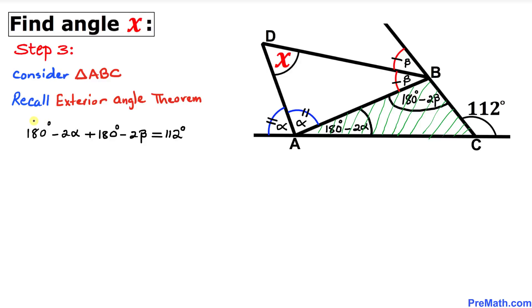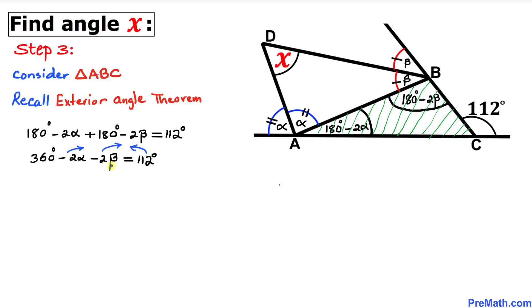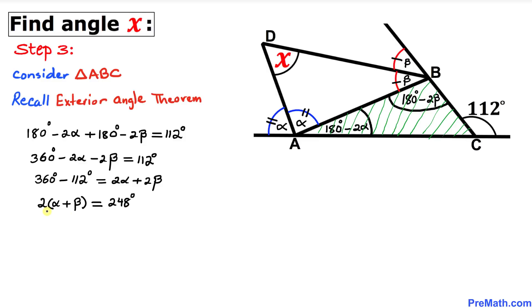Let's go ahead and combine the like terms. We can write 2 times 180, which is 360 degrees, minus 2 alpha minus 2 beta, equals 112 degrees. Now let's move 112 degrees to the left hand side and 2 alpha and 2 beta to the right hand side. So we can write 2 times (alpha plus beta) equals 248 degrees. Let's divide both sides by 2, so alpha plus beta turns out to be 124 degrees.